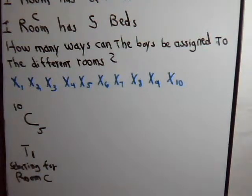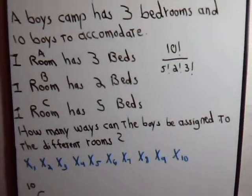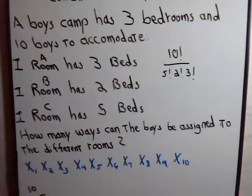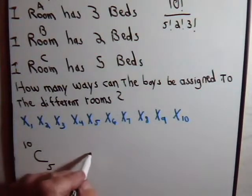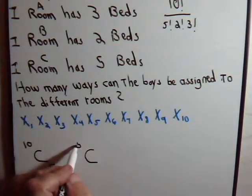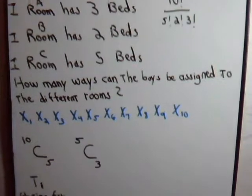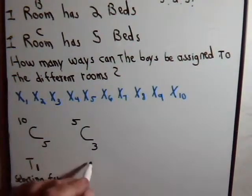Then, once those five are selected, we have five left. Three of them we have to choose for room A. How many ways can we do that? Well, we know what that expression is. There's five boys. We're going to select three of them. And that is task T2.